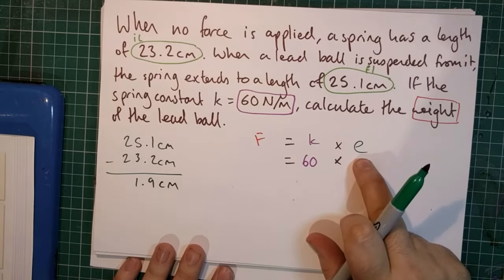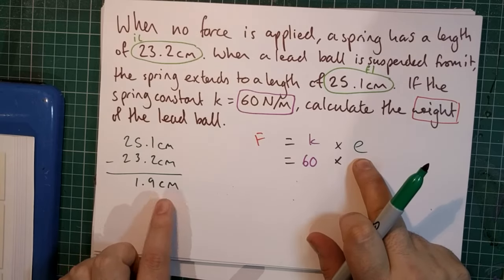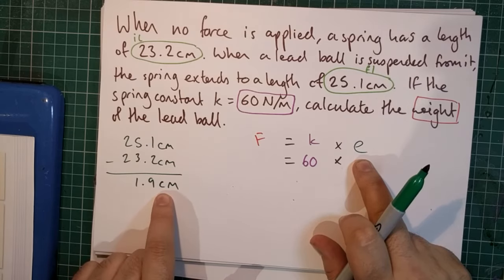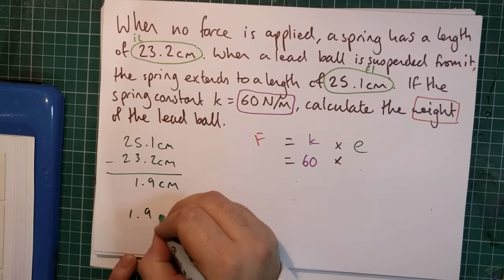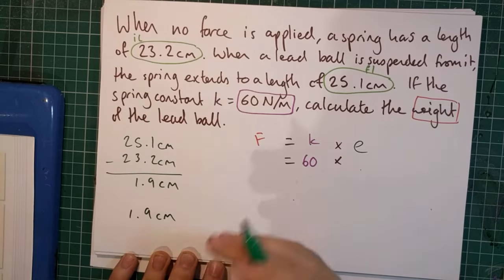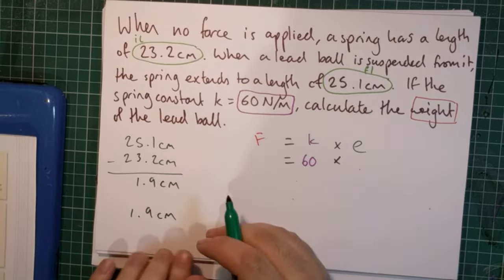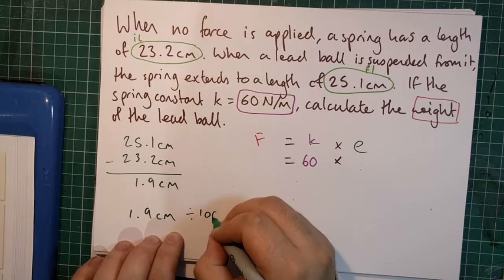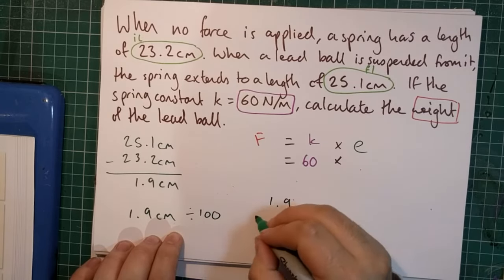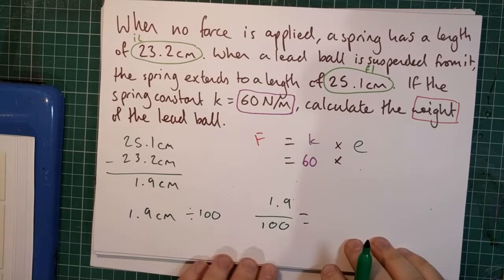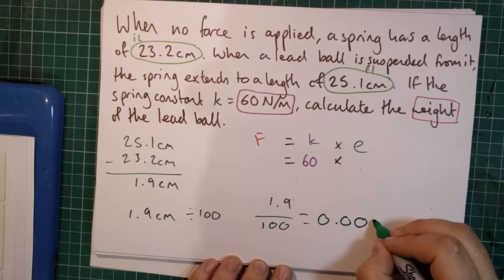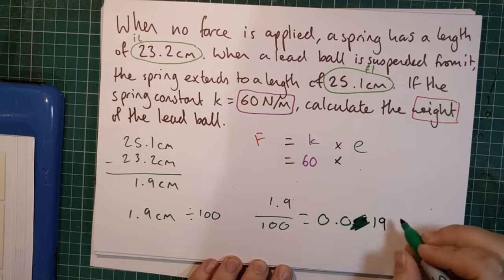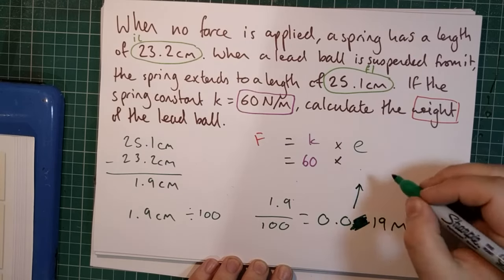But, extension is measured in meters, and the number I have so far for extension is in centimeters. So, I need to convert between the two. So, I know that if I have 1.9 centimeters, well, there are 100 centimeters in a meter. Therefore, if I take this answer and divide it by 100, or 1.9 over 100, then that is going to give us 0.019 meters, which is the number we can put up there.